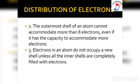Electrons in an atom do not occupy a new shell unless all the inner shells are completely filled. This means that the electron shells in an atom are filled in a stepwise manner — first the K shell, then the L shell, then M shell, N shell, and so on.